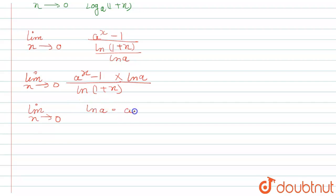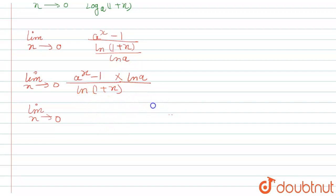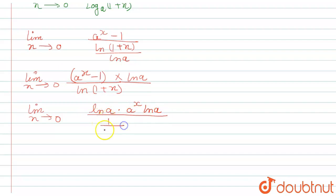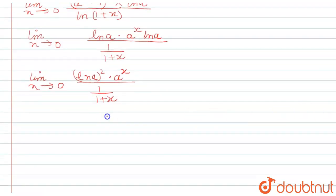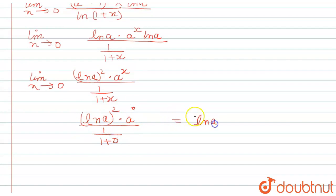Now we apply L'Hôpital's rule and differentiate. The numerator differentiates to ln a times a raised to the power x times ln a, and the denominator differentiates to one upon one plus x. So it becomes limit x tends to zero of (ln a)² times a^x upon one upon (one plus x). Putting x equals zero, it becomes (ln a)² times a^0 upon one upon one, which equals (ln a)².